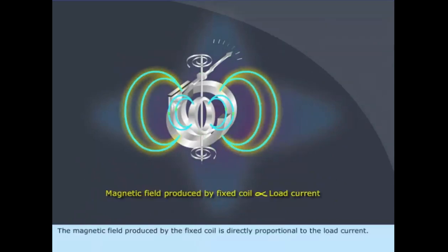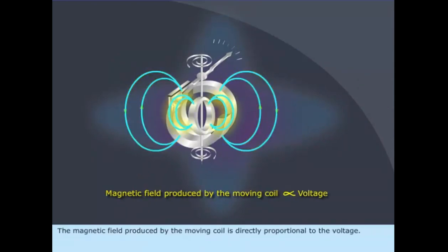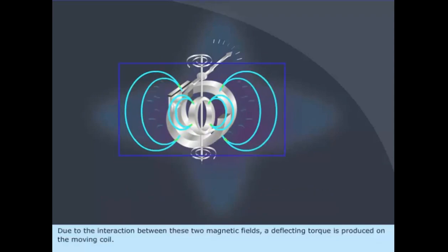The magnetic field produced by the fixed coil is directly proportional to the load current. The magnetic field produced by the moving coil is directly proportional to the voltage. Due to the interaction between these two magnetic fields, a deflecting torque is produced on the moving coil.